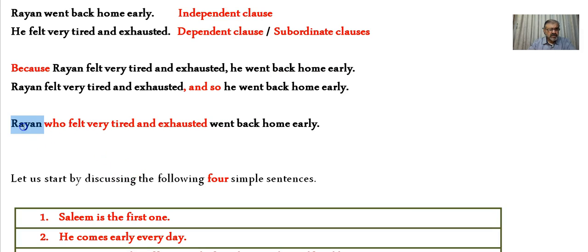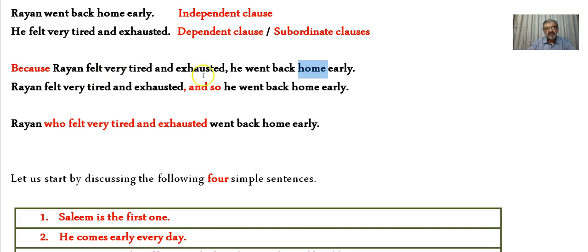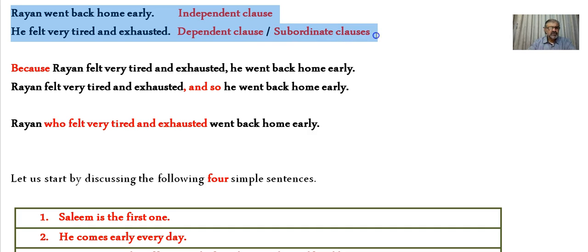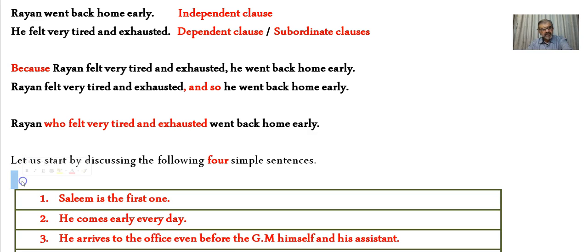Another way of joining these sentences is: 'Ryan, who felt very tired and exhausted, went back home early.' I could add even more information to this sentence — describing what kind of home it is, or why he felt tired — making it bigger and bigger. But the basic idea is simply: how do I join these two simple sentences together?